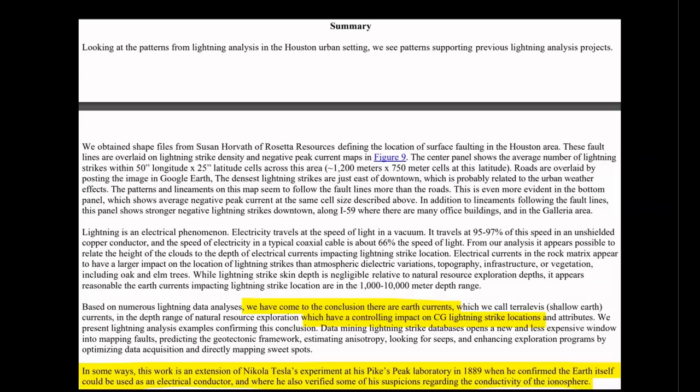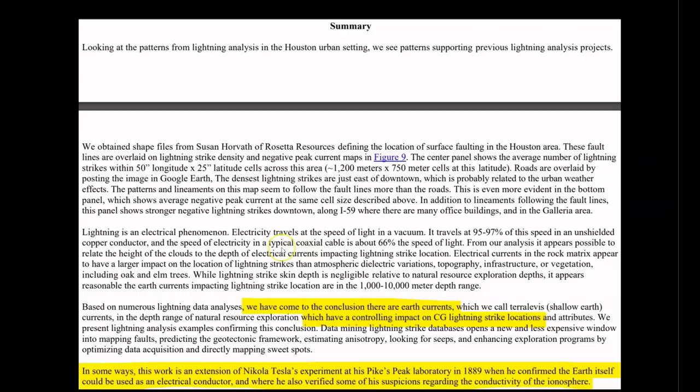So in conclusion, before we proceed, allow this to be the foundation of evidence for everything that you are about to see. And I quote, we have come to the conclusion that there are earth currents, which have a controlling impact on cloud to ground lightning strike locations. In some ways, this work is an extension of Nikola Tesla's experiment at his Pikes Peak laboratory in 1889, when he confirmed that the earth itself could be used as an electrical conductor. Now, on to the White Horse and Cherhill.